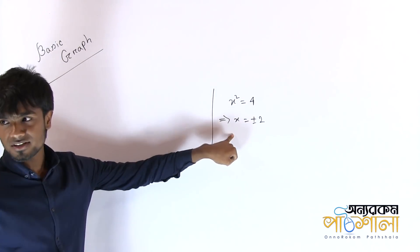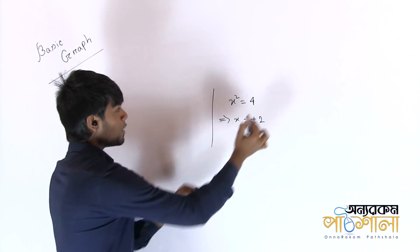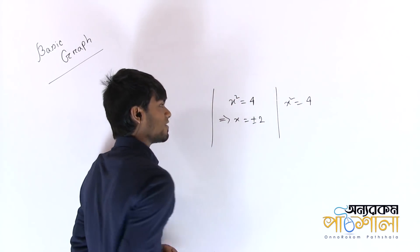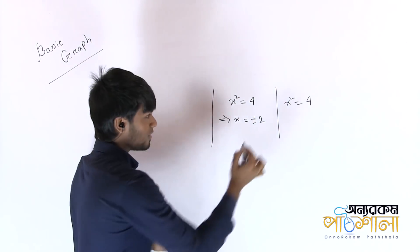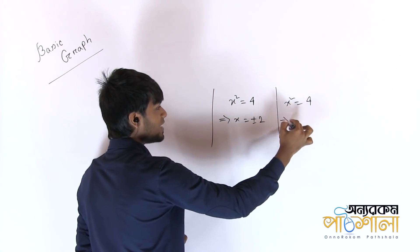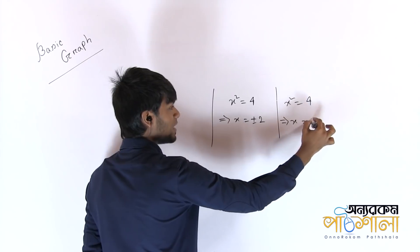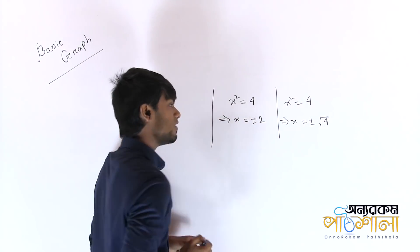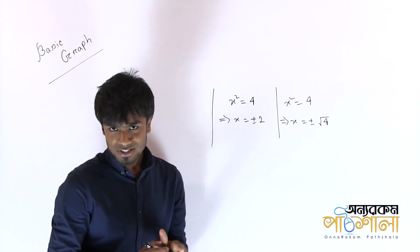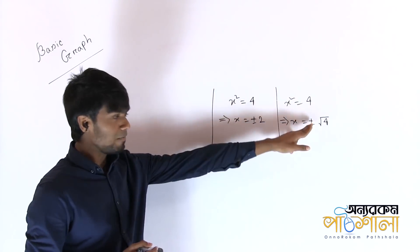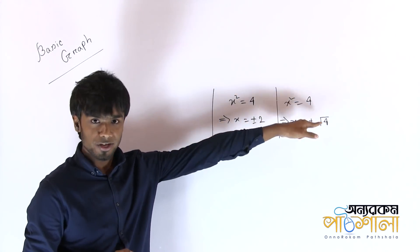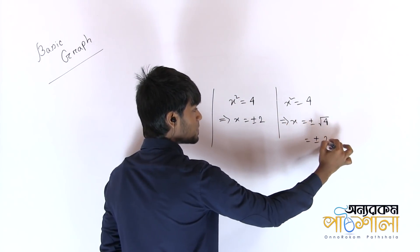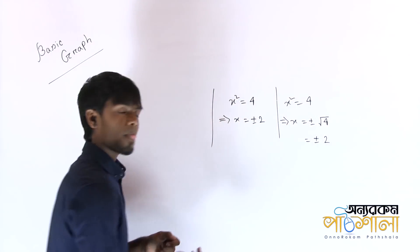What is the problem? I will tell you: x squared is equal to 4. So x is equal to plus minus square root of 4. What is the answer? Plus minus 2.